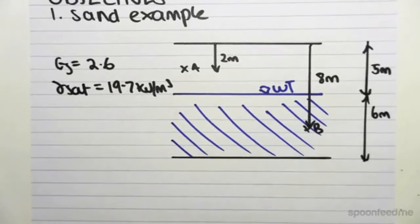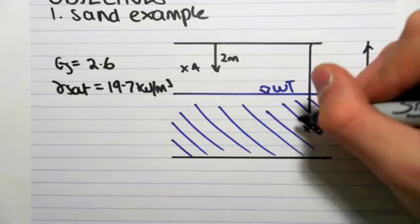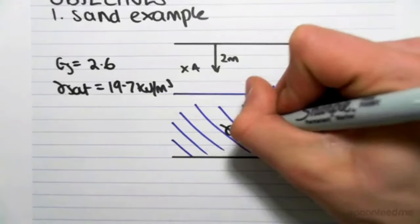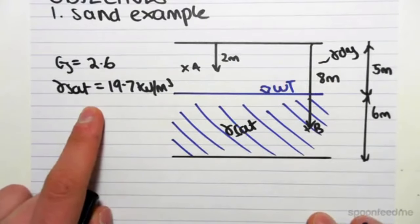We want to find the effective stress at point A and point B. Now because this region is all dry and this region is all saturated, this is gamma dry and this region is gamma sat.